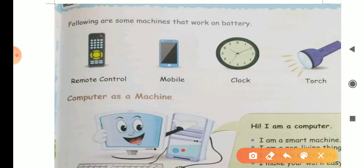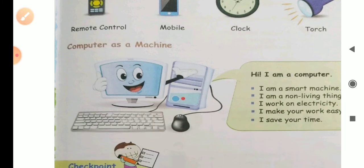Following are some machines that work on battery. There are some machines that need human power and some work on electricity. Now here we have some examples that work on battery, like remote control, mobile, clock and torch. So these are some examples of machines that work on battery.